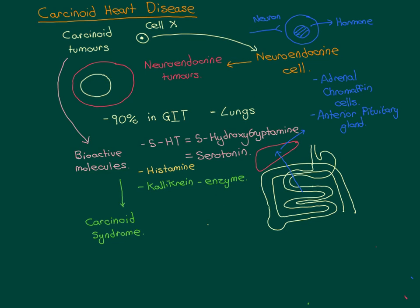If you have a carcinoid tumour in the lungs, the bioactive molecules will go to the left heart first and can trigger carcinoid heart disease on the left side. But the blood still eventually passes through the liver, so you get a milder form of carcinoid syndrome whilst the liver is intact. In summary, significant liver metastases are usually required before carcinoid syndrome develops, especially for GIT tumours.